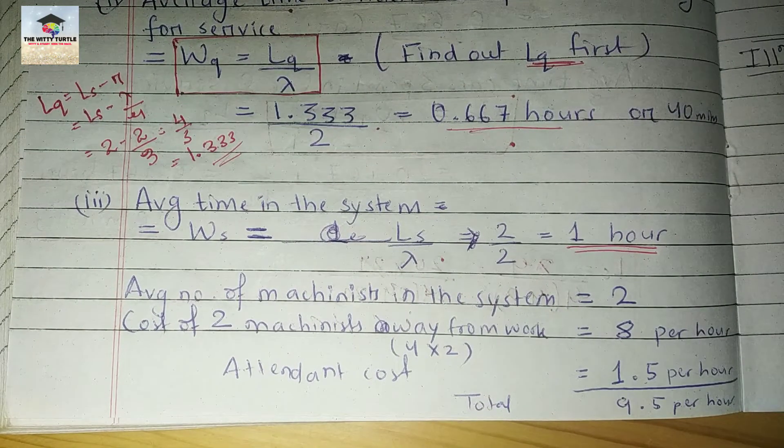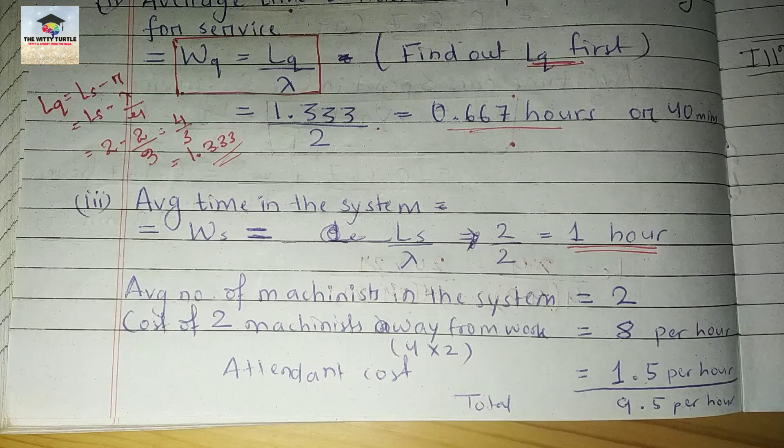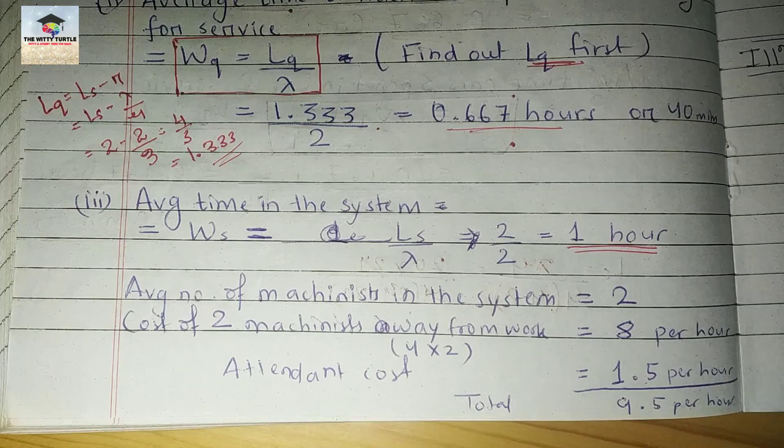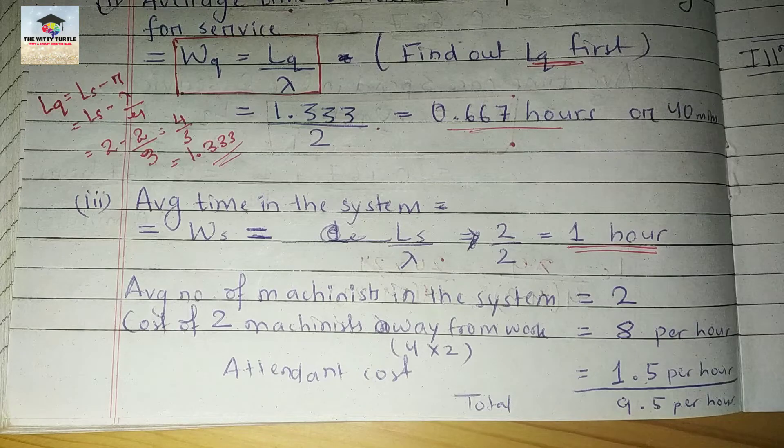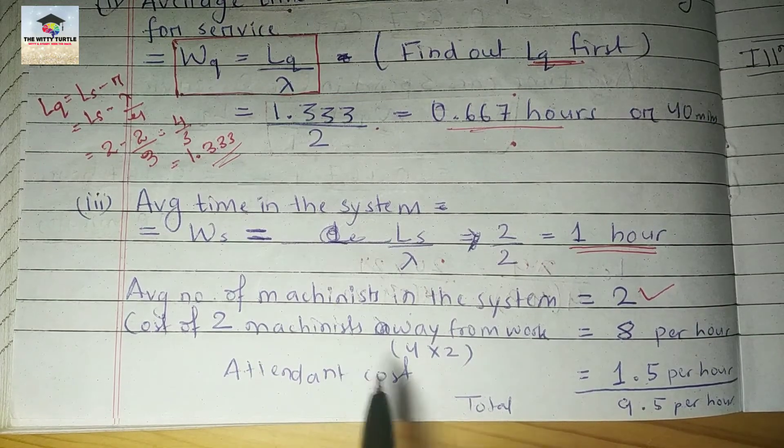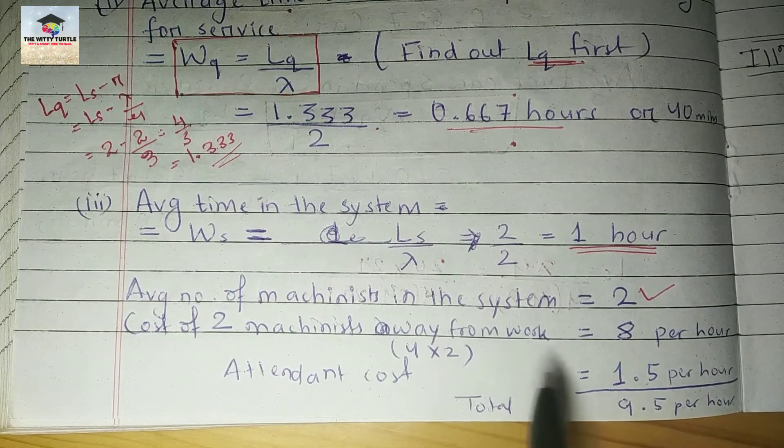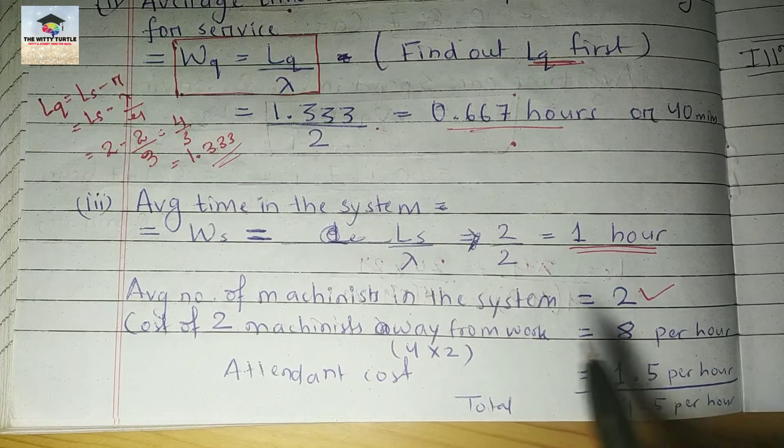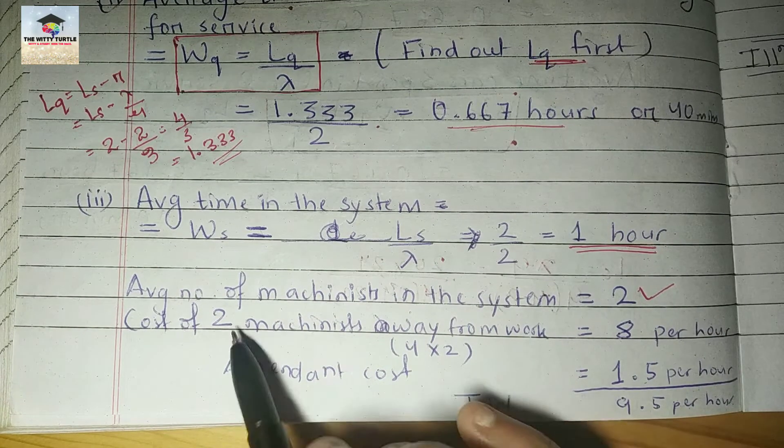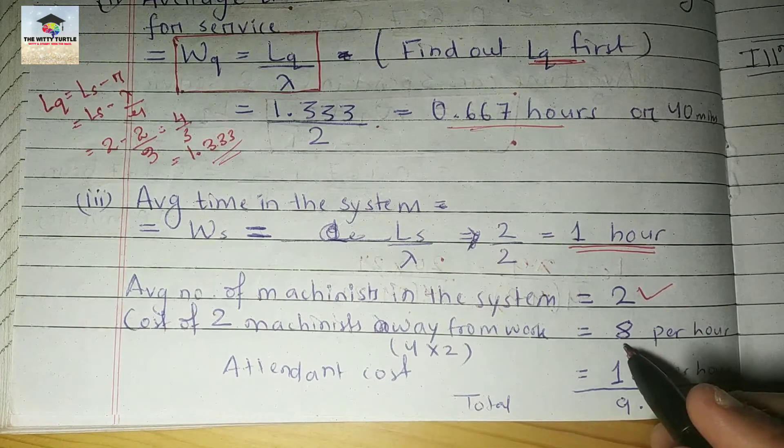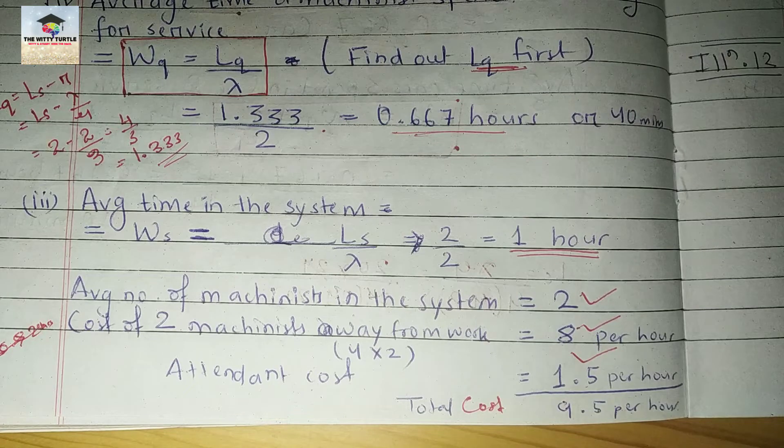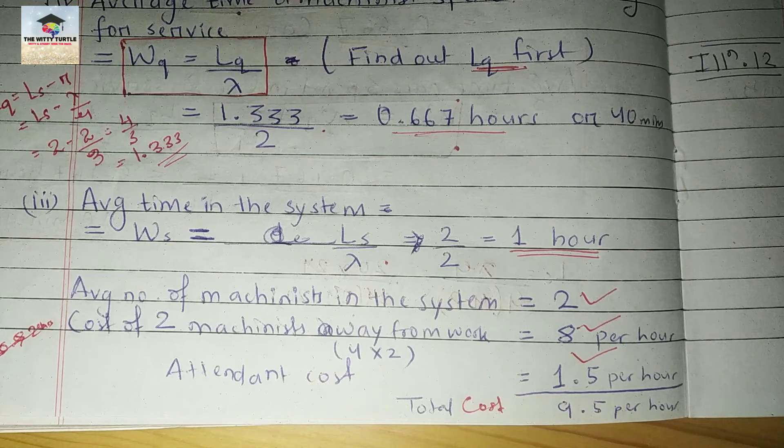First we will find out the total cost for 1 hour, then multiply with 8. How many machinists do we have in the system? 2 machinists. Cost of 2 machinists who are away from work is rupees 4 per hour, so for 2 machinists it will be rupees 8 per hour.